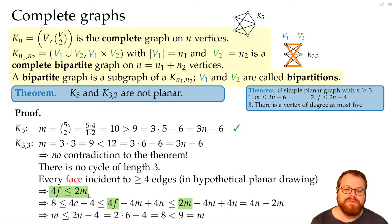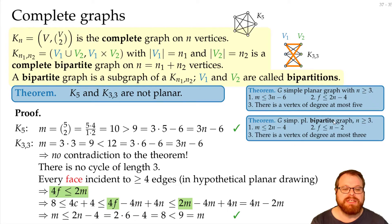And in general, if we use this formula for bipartite graphs, then this gives us the adjusted theorem, we have at most 2n-4 edges, we have at most n-2 faces, and there is always a vertex of degree at most 3.